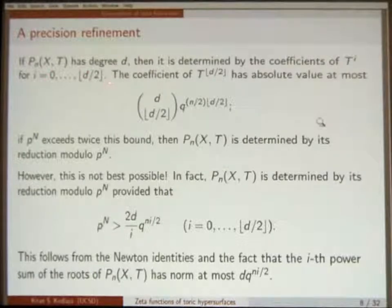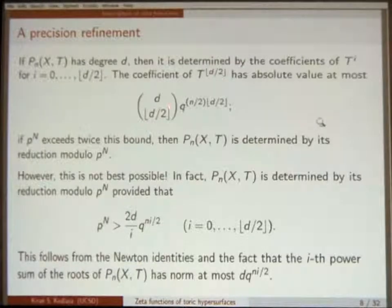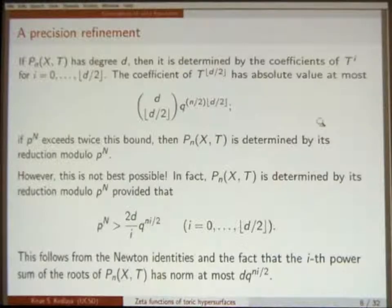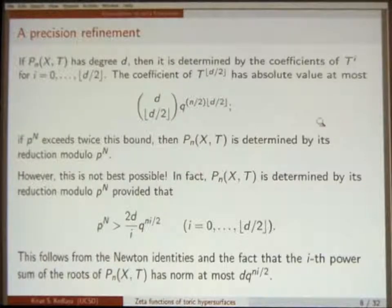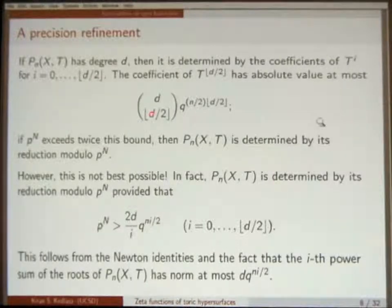The hardest thing to do is to bound the middle coefficient. The middle coefficient has size bounded by a sum of products — there are binomial(d, floor(d/2)) terms, each of size Q^(n/2). So if p^n is strictly larger than twice this number, then a congruence determines the number exactly. But that's not optimal — this binomial coefficient is too large because really you should not be bounding the elementary symmetric functions, which have this many terms, but you should be bounding power sums, because a power sum has d terms no matter what degree you're talking about.